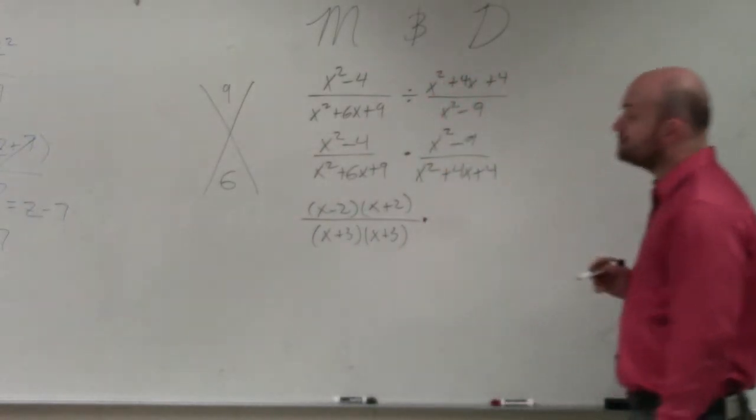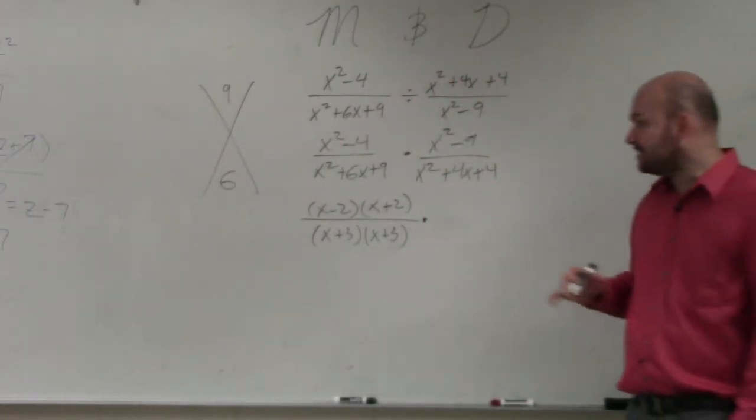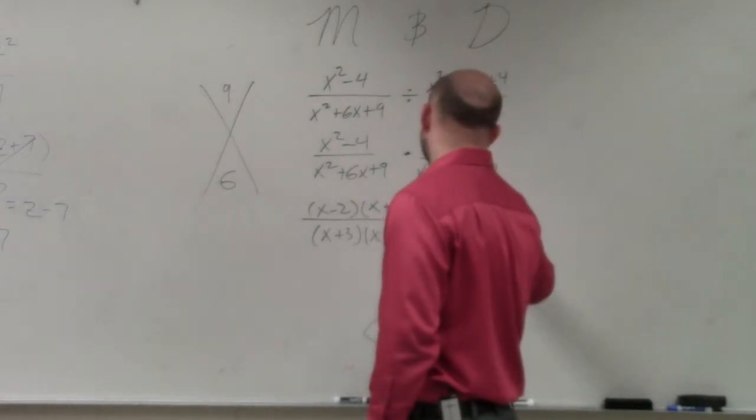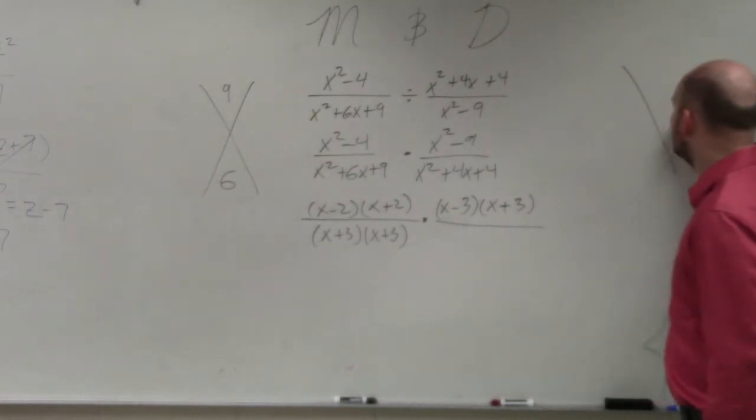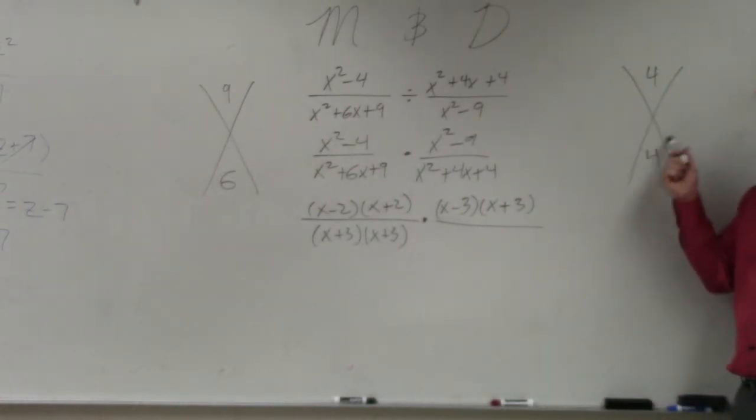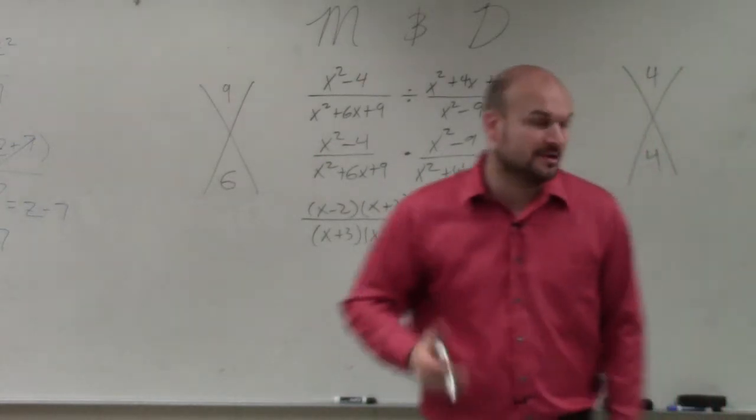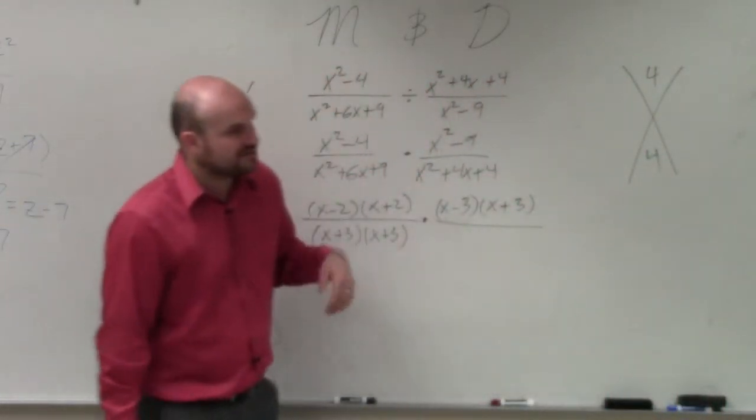Times here, x squared minus 9. That is an example of difference of two squares. So I'd have x minus 3 times x plus 3. And then over here, what two numbers multiply to give you 4 and then add to give you 4. This is an example of a perfect square trinomial, which would give you the factors of 2 and 2.